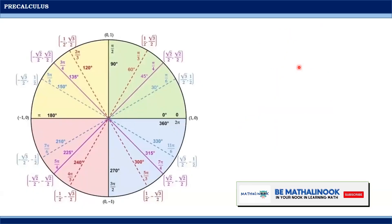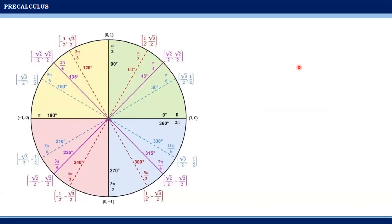In the previous video, I showed you this summary diagram of the coordinates of the special angles in the unit circle. We discussed the coordinates of 30 degrees, 45 degrees, and 60 degrees. Specifically, the coordinates of 30 degrees are (√3/2, 1/2), the coordinates of 45 degrees are (√2/2, √2/2), and the coordinates of 60 degrees are (1/2, √3/2).